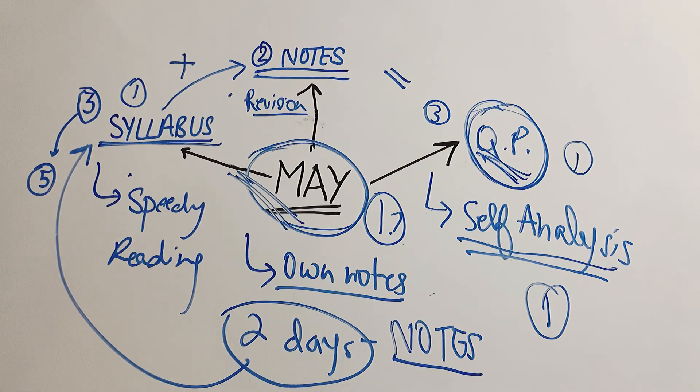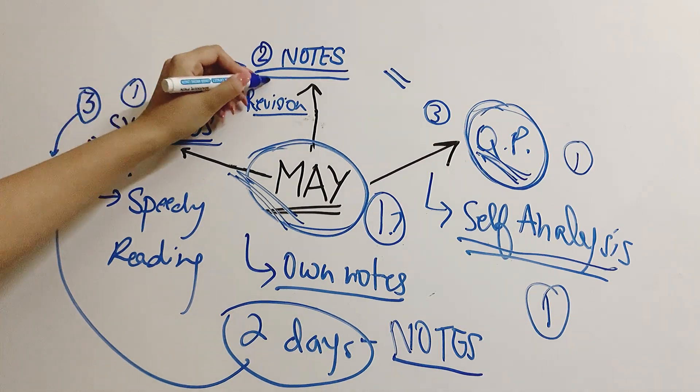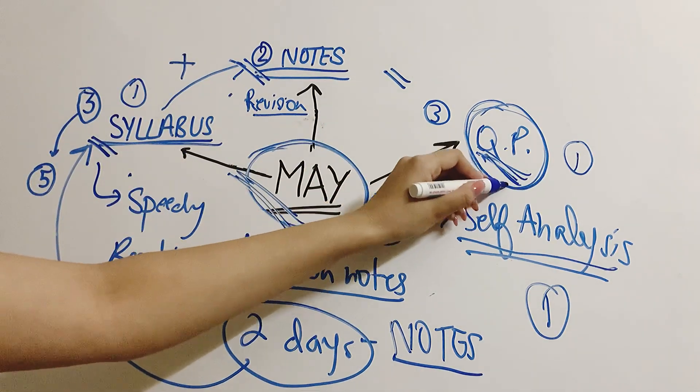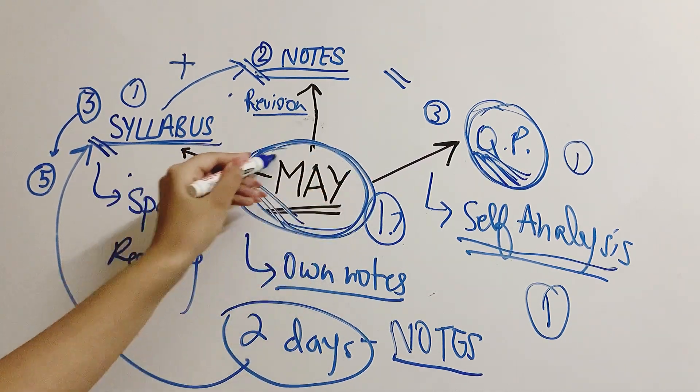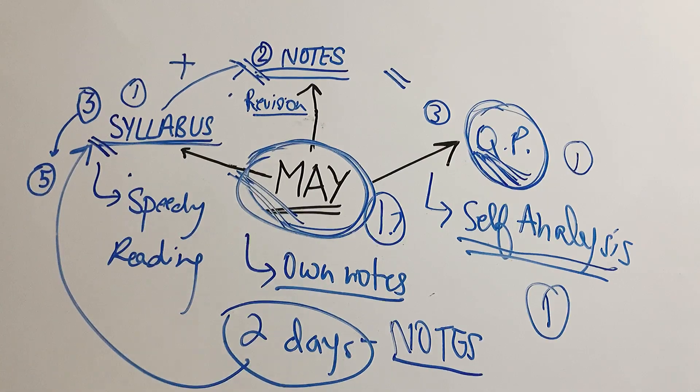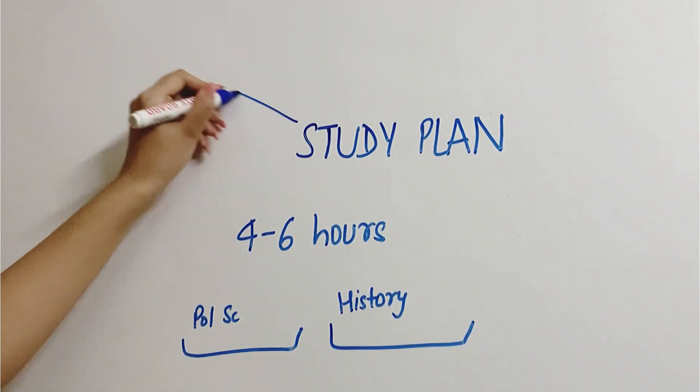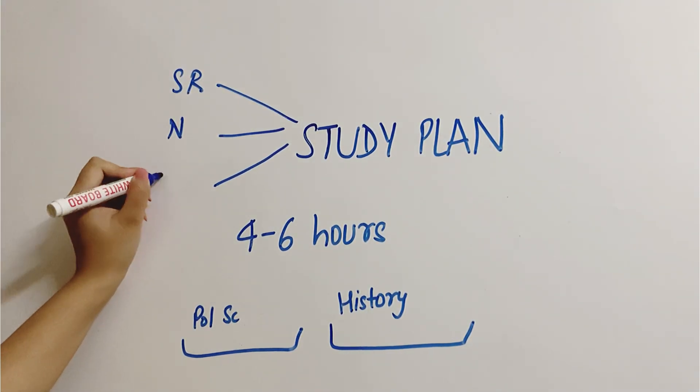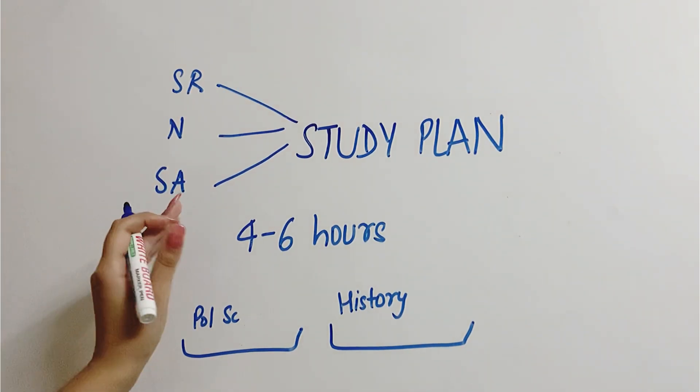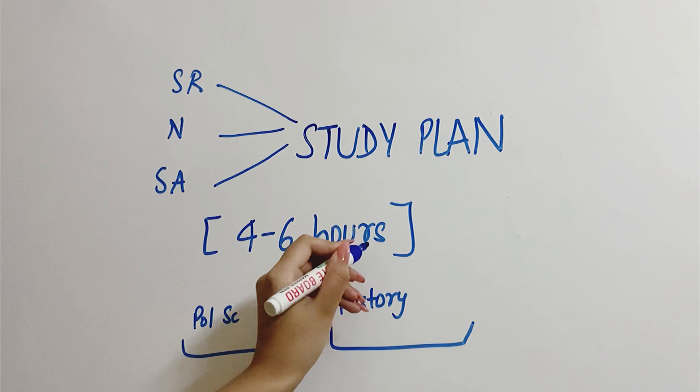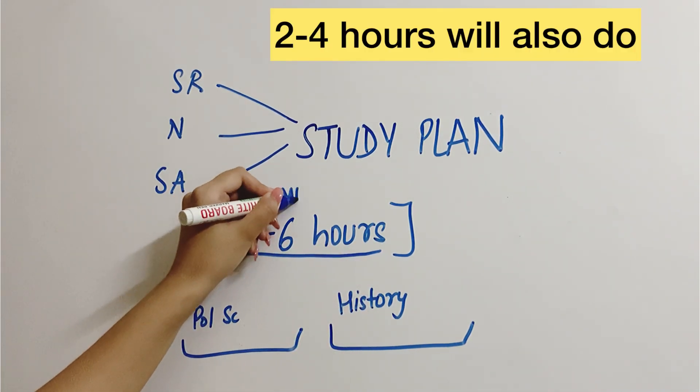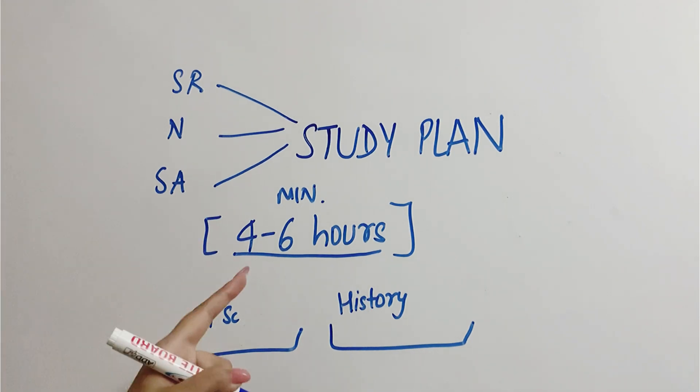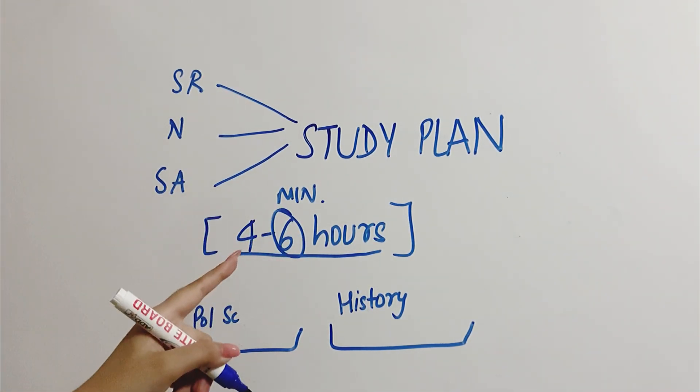So this is the ideal study plan that you should have. In this, your reading is happening, revision is happening, and analysis is happening. You cannot utilize this time better than this. See, this study plan in which we have taken 3 actions, which is speedy reading, notes and self analysis. Its time requirement per day will be minimum 4 to 6 hours. This is the minimum I am telling you. Buckle up guys, you should definitely do 6 hours because in April a lot of relaxation has happened, I guess.